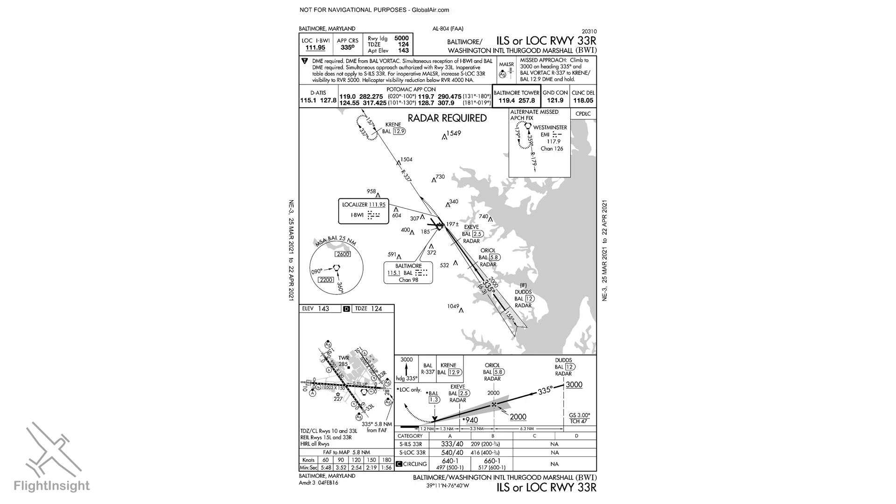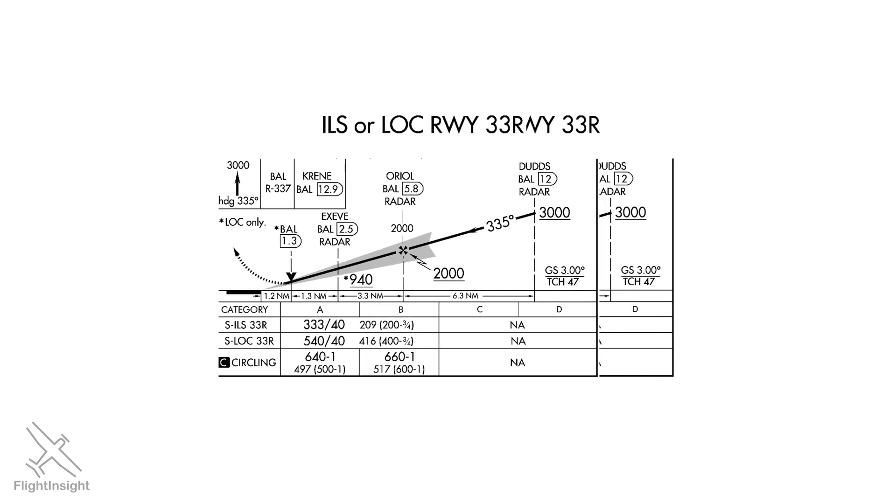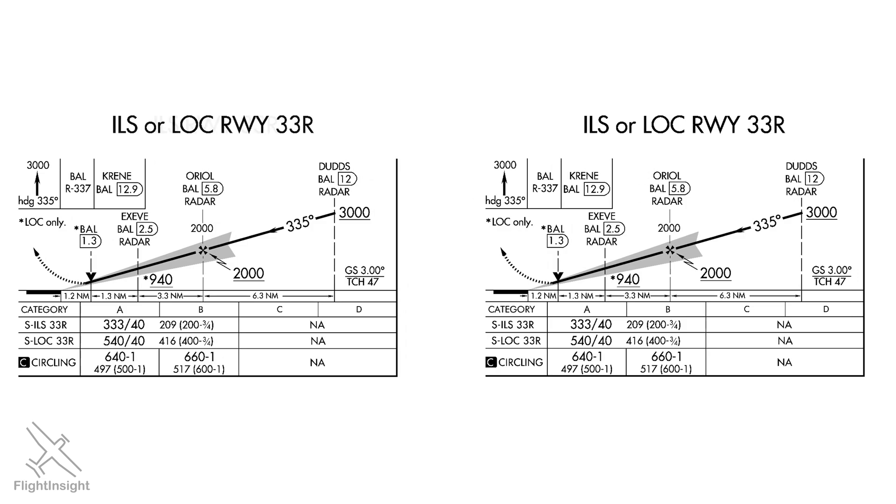Let's look at an example to see the difference. This is the ILS or localizer approach to runway 33 right at Baltimore. The reason we call it the ILS or LOC approach is because we're actually seeing two approaches in one approach plate. If we duplicate the profile view of the approach, we can separate how the approach is depicted for the ILS only and for the localizer only.